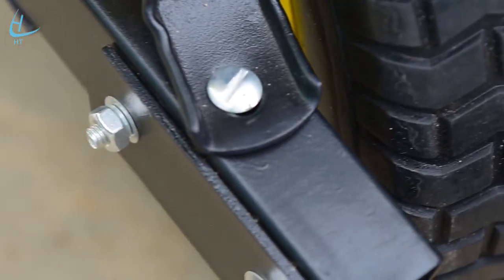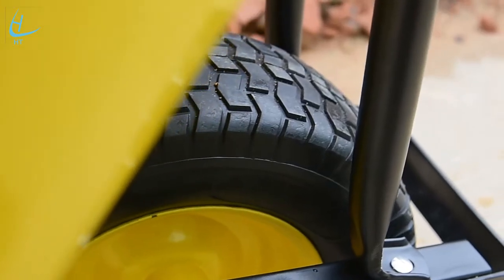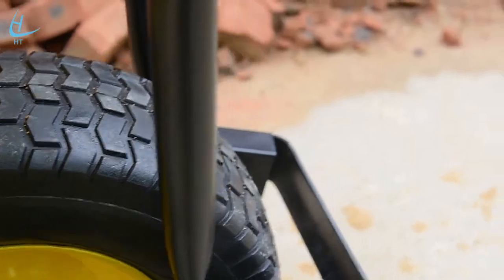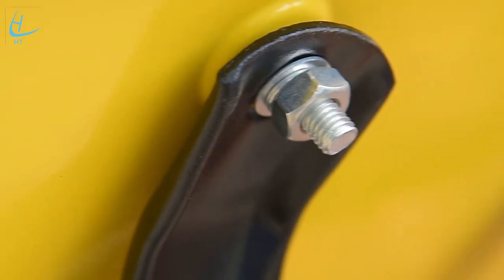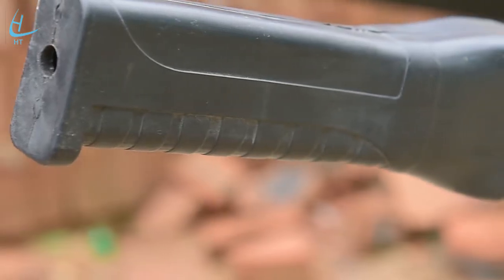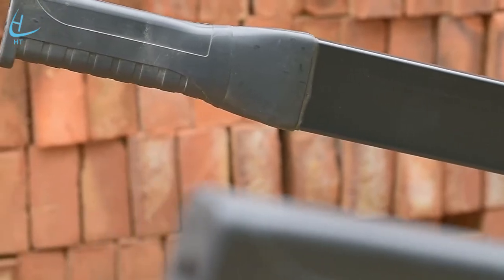The wheelbarrow comes with a 0.8mm thick, UV-treated, powder-coated steel tray and a 16x6.5-8 PU tire on a heavy-duty steel rim.